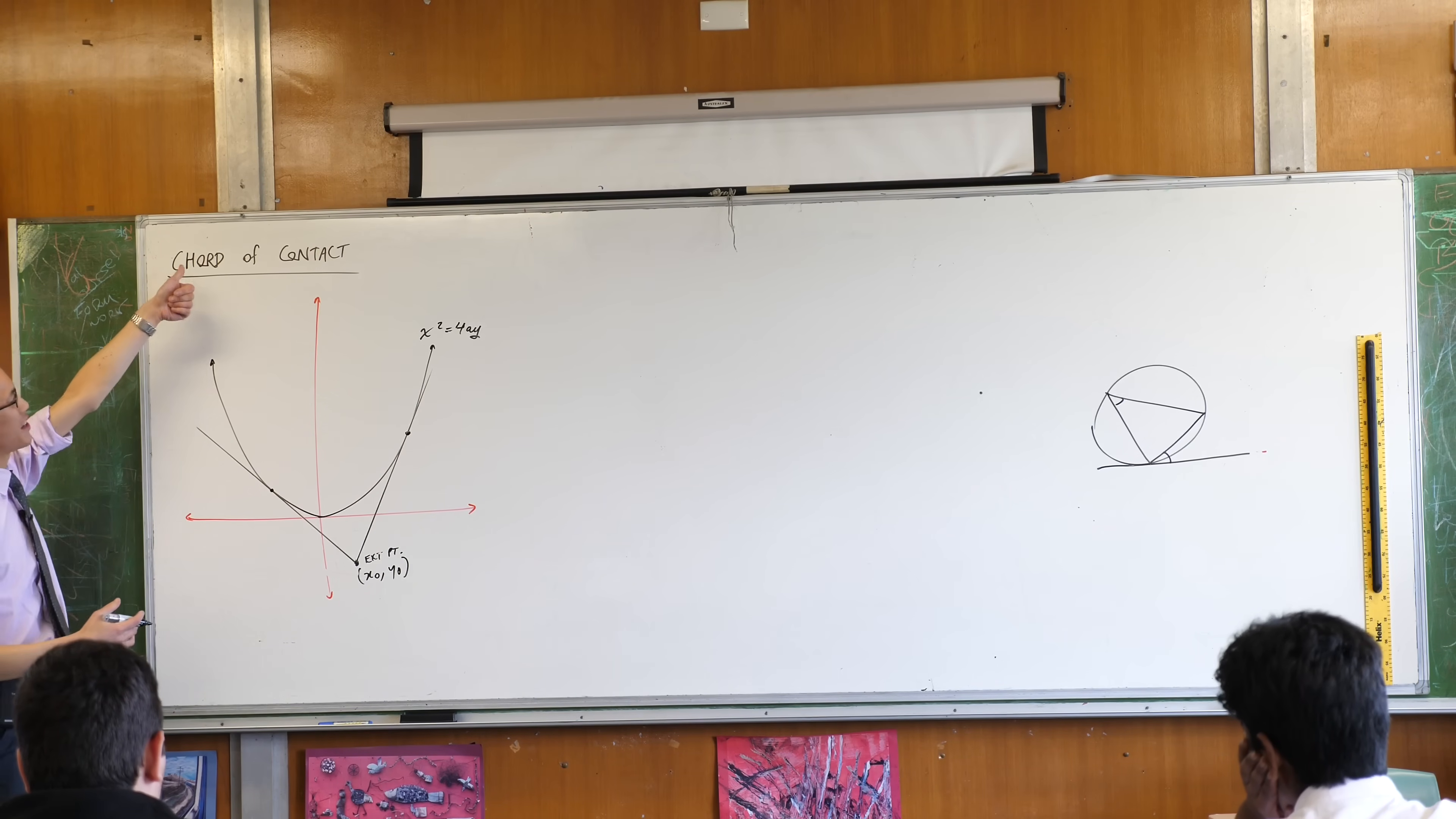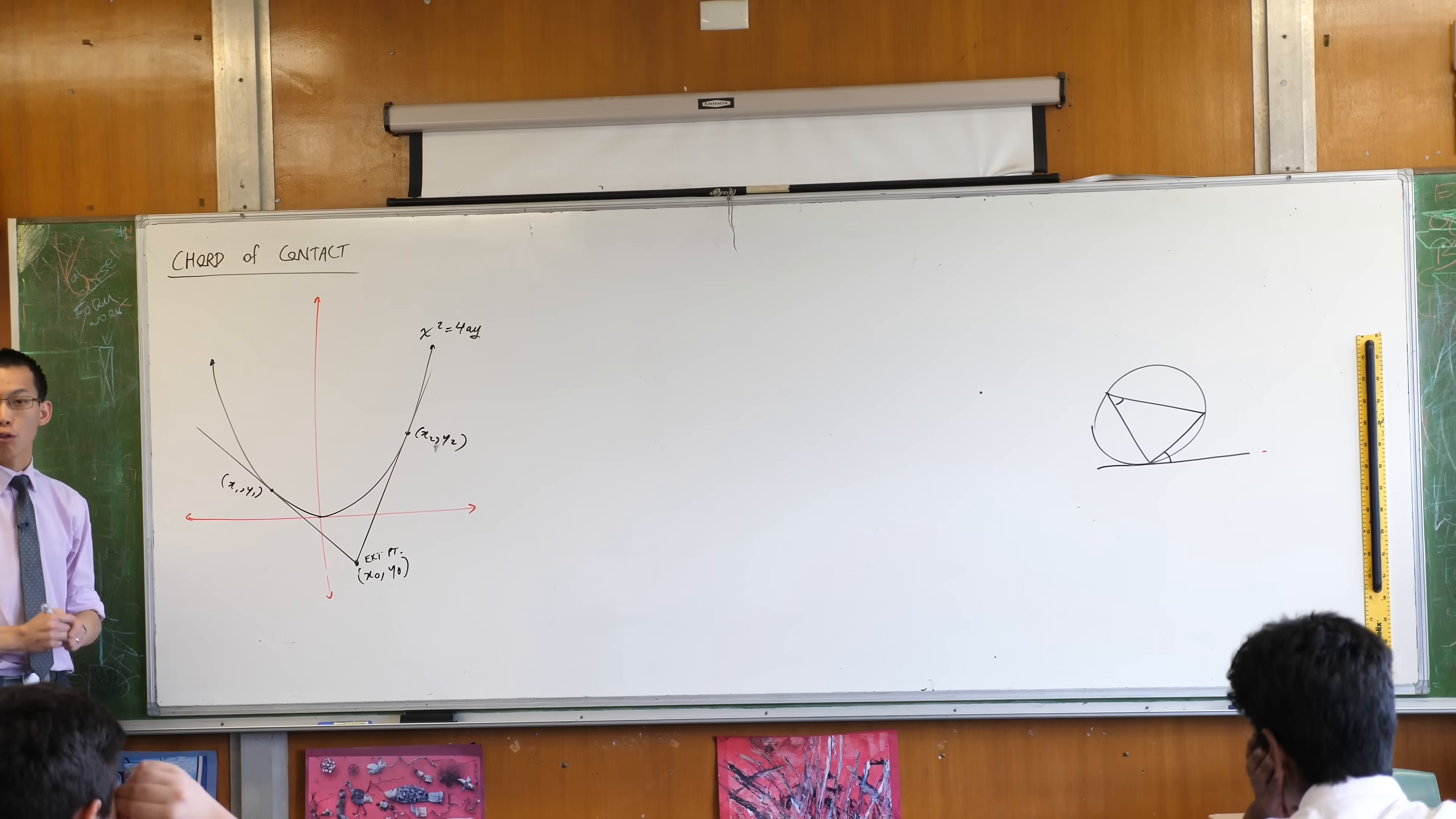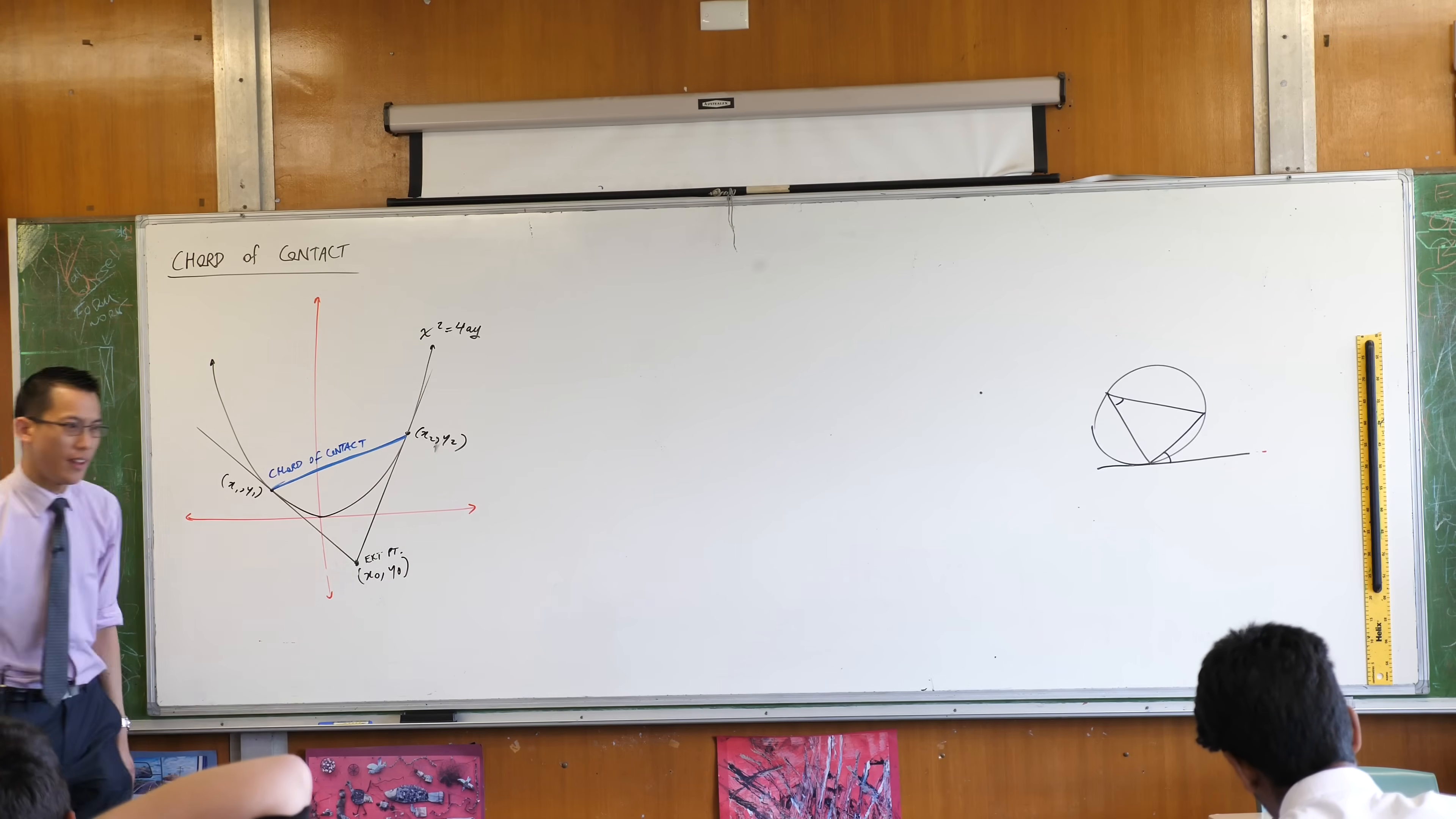So remember we said a chord is going to join two points on the parabola. Well, here are our points. So being that our external point is x0, y0, let's call these guys x1, y1, and x2, that's meant to be a comma, y2. If you have another color there as a bonus, we can now draw in the chord of contact from x1, y1 to x2, y2. So here's where mine goes. Once you've done that, go ahead and label it, chord of contact.